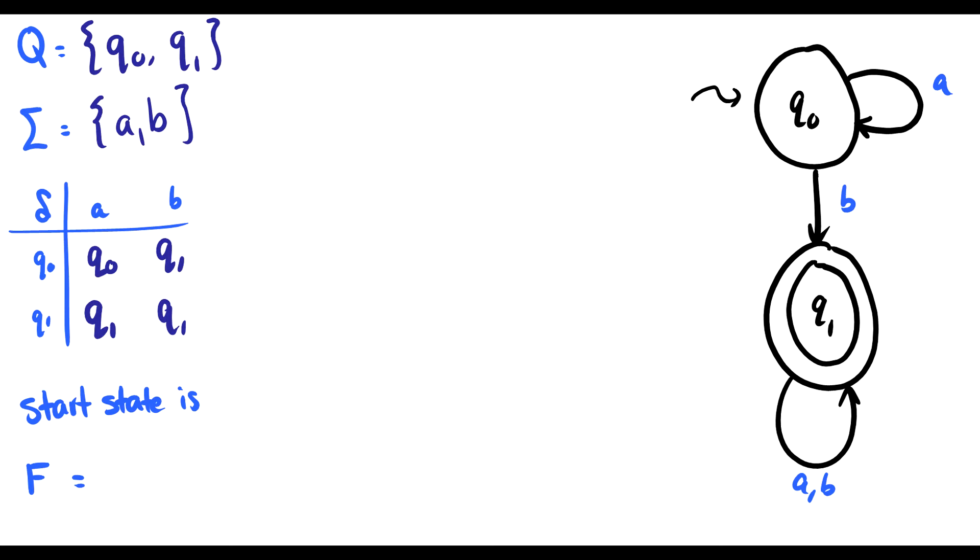Which is our start state? Well, we see the squiggly arrow going here to Q0. So our start state is Q0. And what are our final states? What are the states that we accept? So this is going to be the set containing Q1. Remember, this is the set of accept states or final states. So we do have to have a set here when we write them.